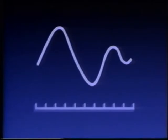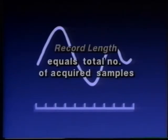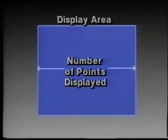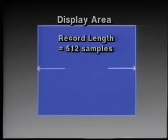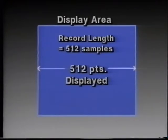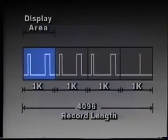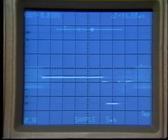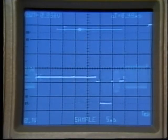The major factor affecting horizontal resolution is the record length — the total number of acquired samples per stored waveform. A DSO may display all or only part of the total number of samples in the record. For example, a digital scope with a record length of 512 samples may display 512 points horizontally, while another DSO with a record length of 4096 points may only display 1024 points horizontally. DSOs like this provide some means, such as scrolling, for viewing different parts of the record. A typical record length is between 512 and 4096 points.